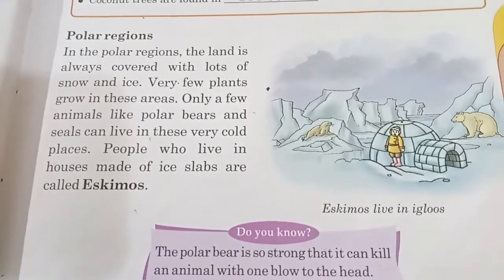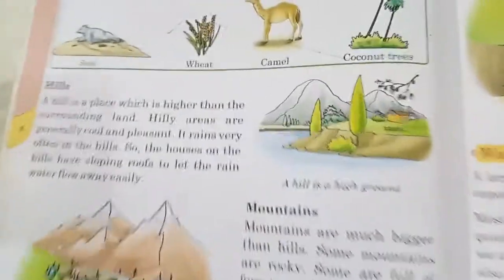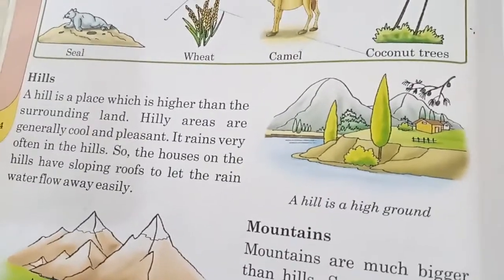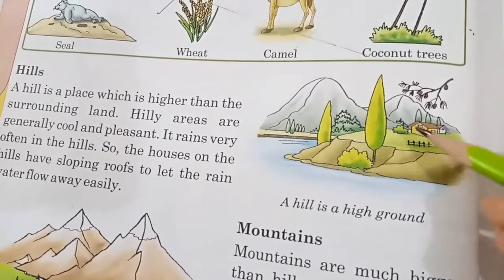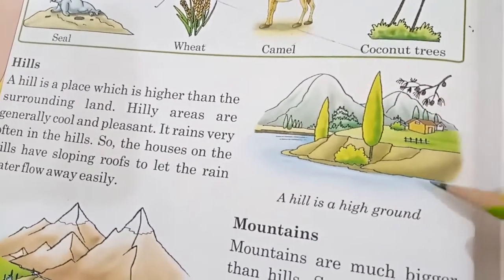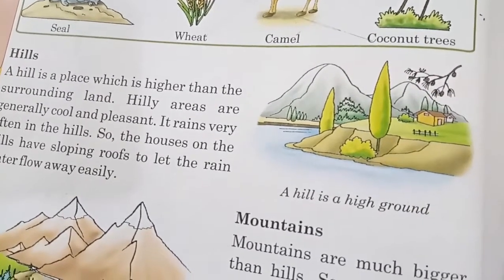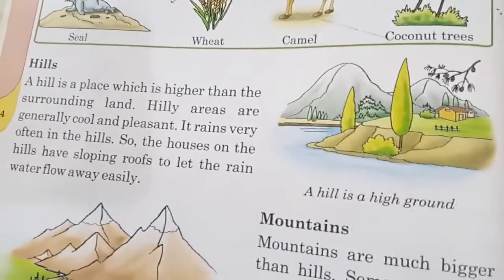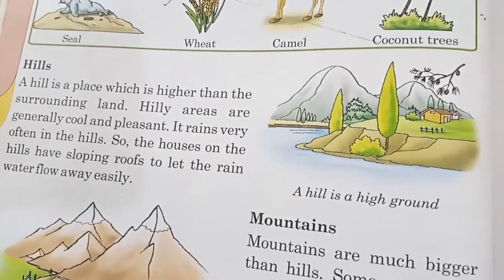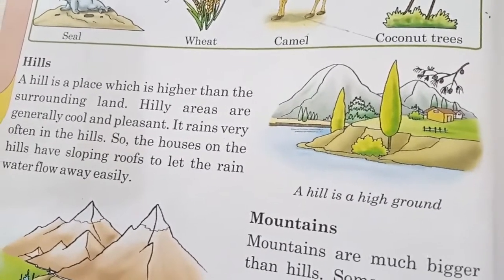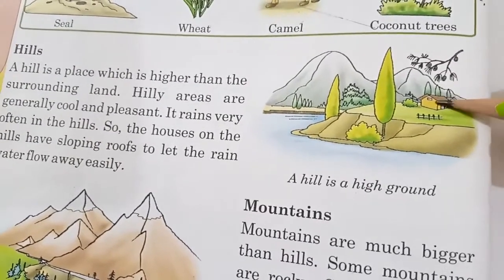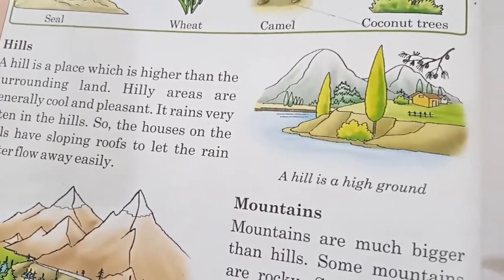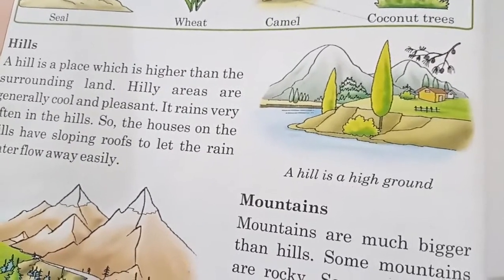Now come to hills. The area of land which is higher than the surrounding is called a hill. The season of hilly areas is very pleasant and cool, and it rains very frequently. Every house in the hill area has a sloping roof so that the water does not stay on the roof.